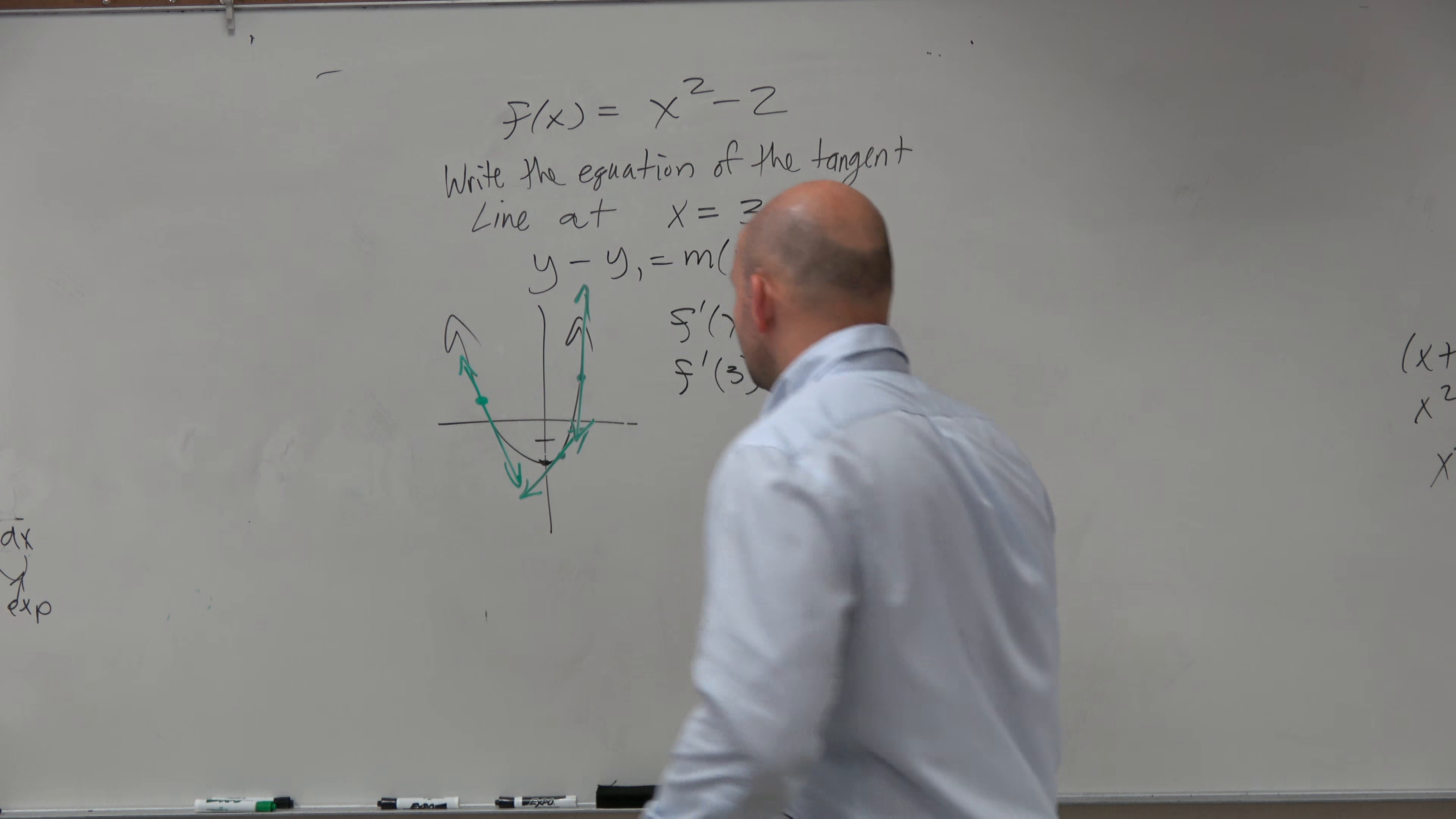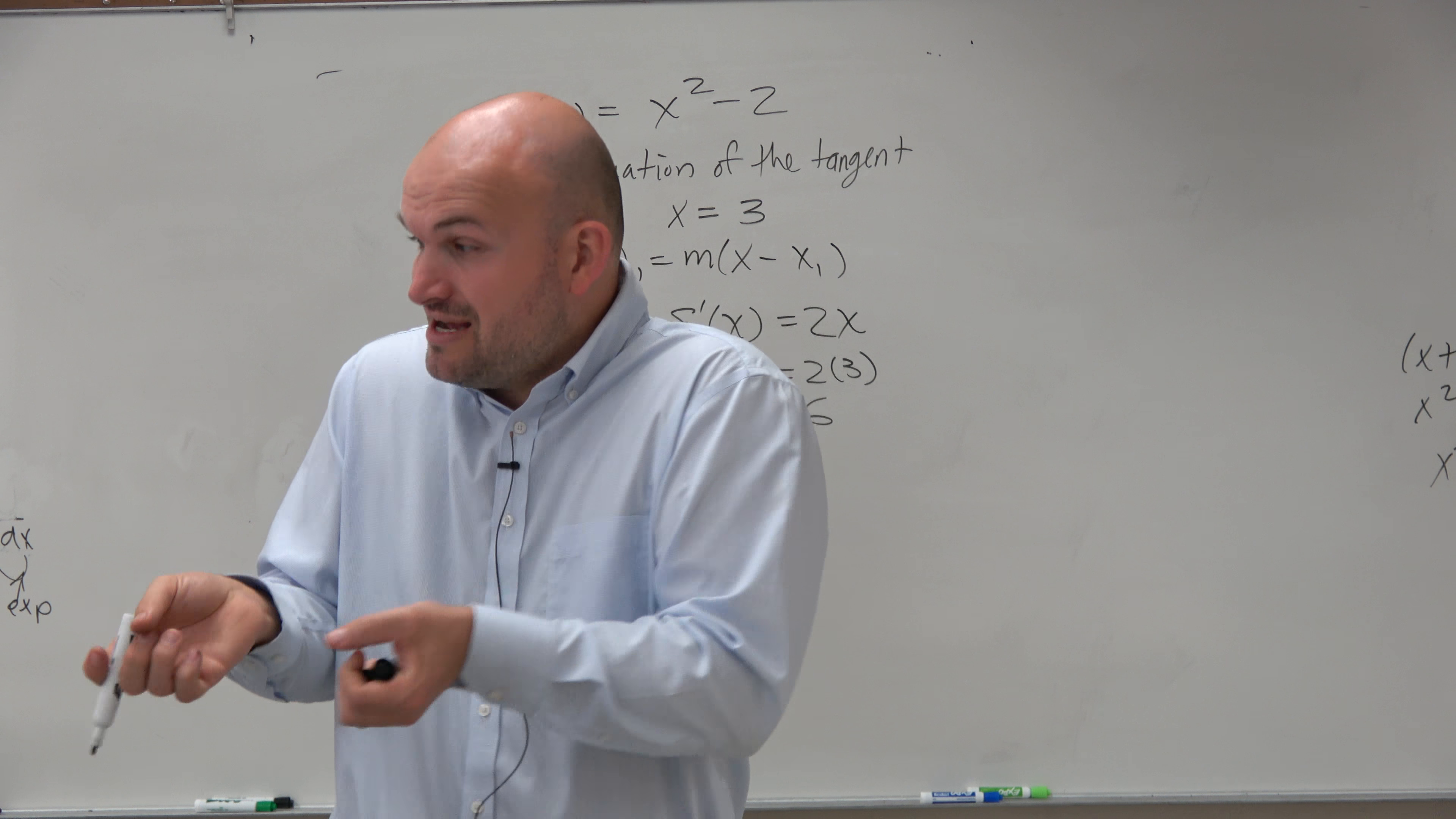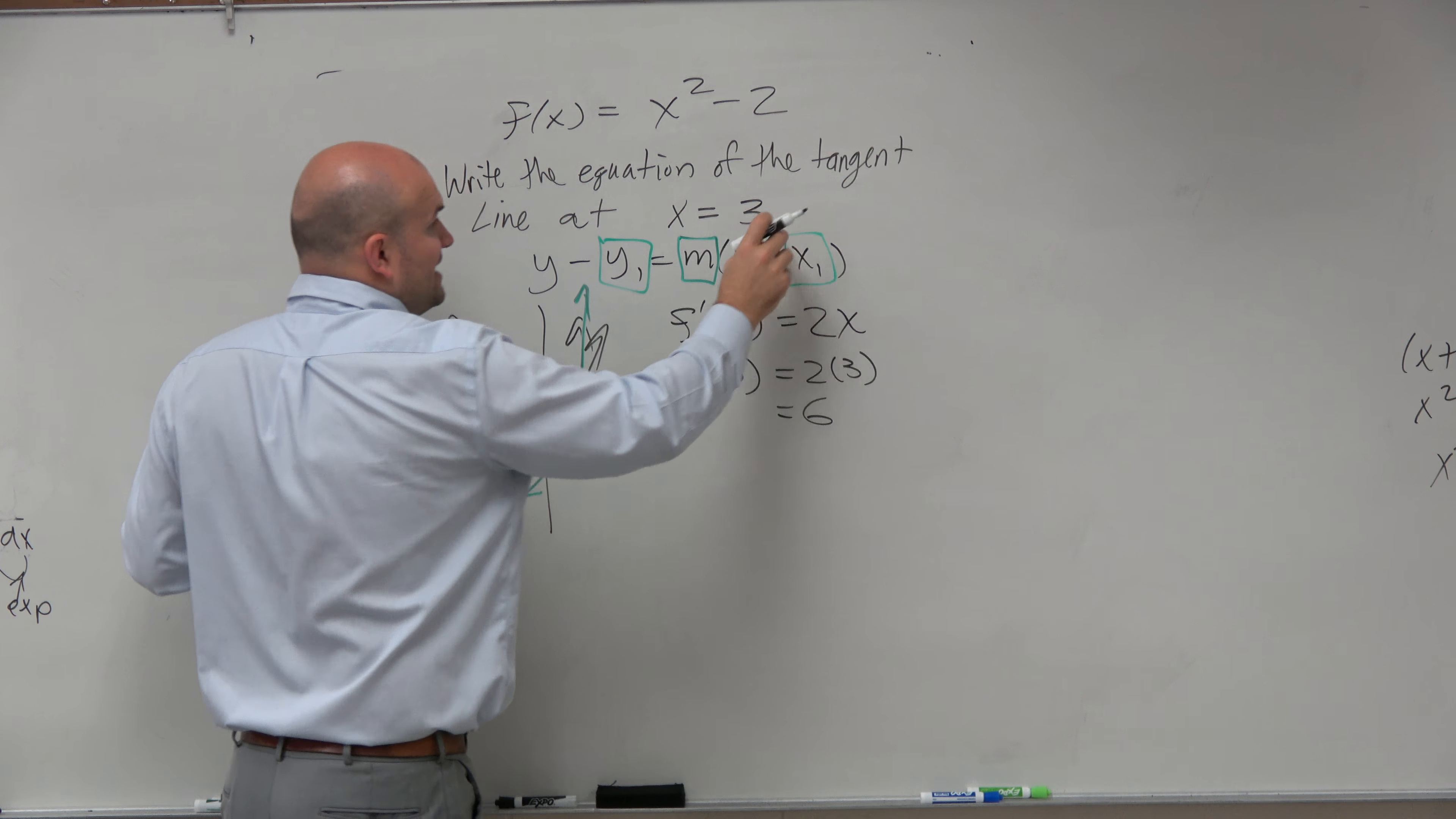So what that means is at x equals 3, this slope is 6. But that's just the slope. They're asking us to find the equation of the line. To find the equation of the line, you need to know slope and the y-value and the x-value.